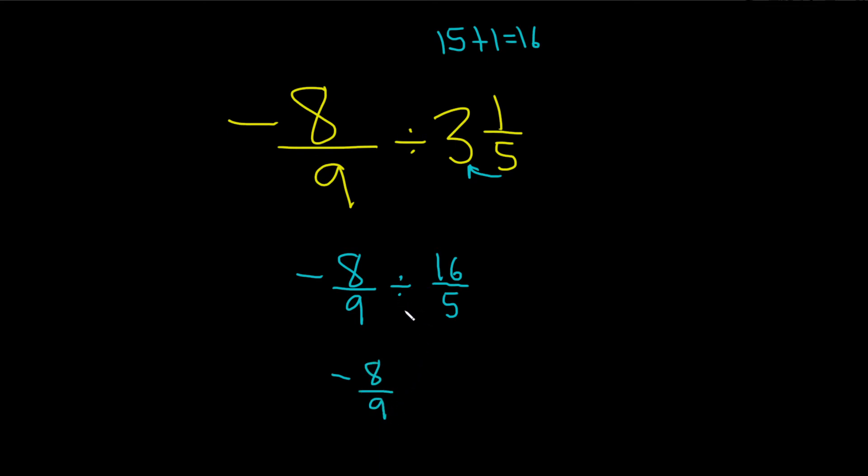And we change the division sign to a times. So times, and then we just flip this number. This is 5 over 16. That's the reciprocal.